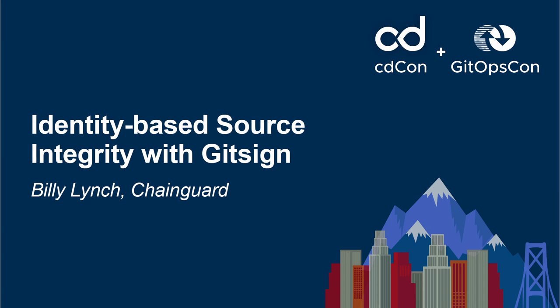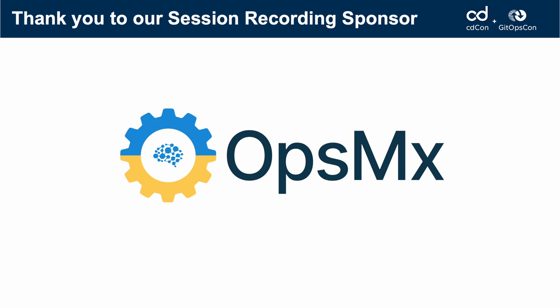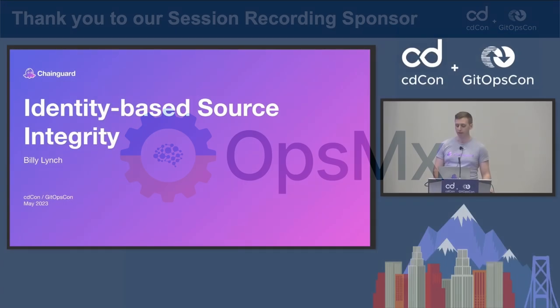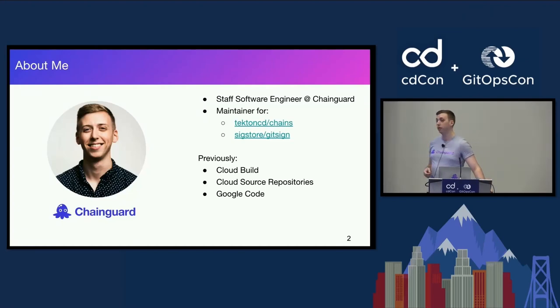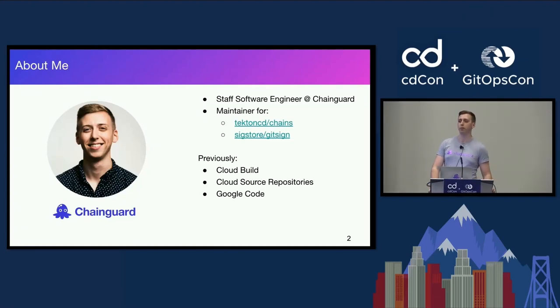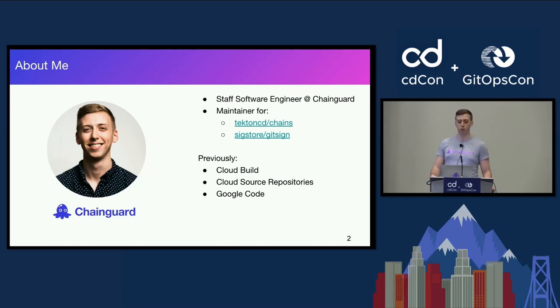Thank you everyone for coming. My name is Billy Lynch and today we are going to be talking about identity-based source integrity. A little bit about myself: I'm a software engineer over at ChainGuard where we do all things software supply chain security. I'm also a maintainer for some open source projects like Tekton Chains as well as SigStore's GitSign, which we'll go into a little bit more today.